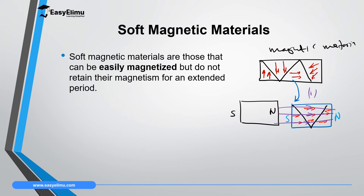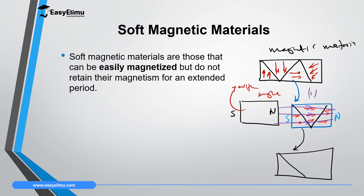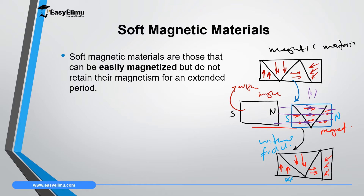Now if you withdraw this permanent magnet, the dipoles in the material will go back to their original positions — in the first domain facing up, second domain facing down, and so on. This material will only become a magnet when there is a magnetic field. Once you withdraw the field, the material becomes demagnetized again. Materials which behave like this are called soft magnetic materials.